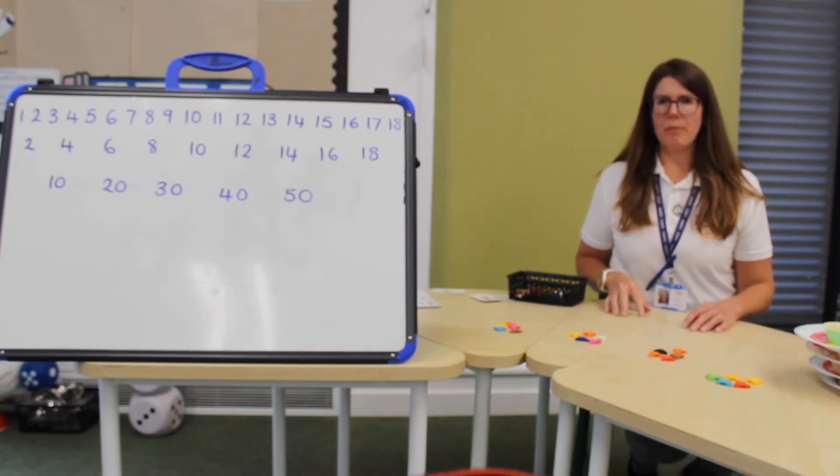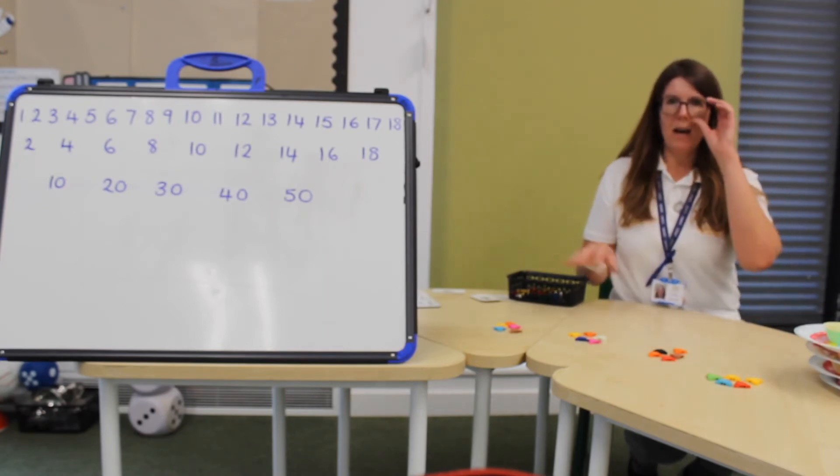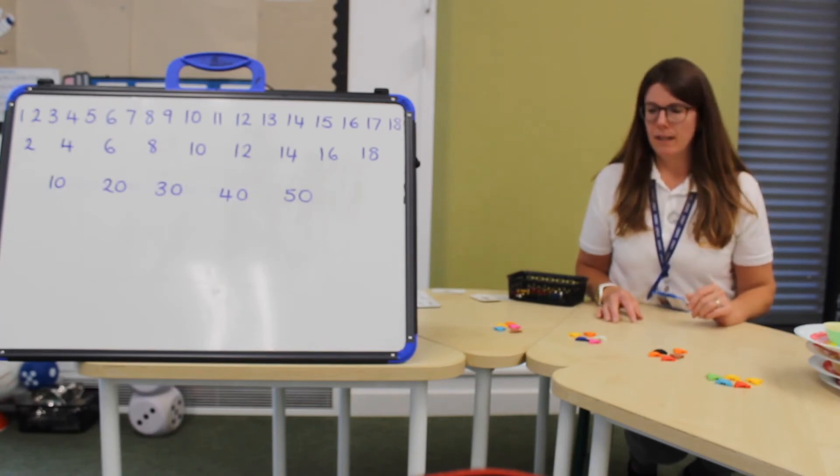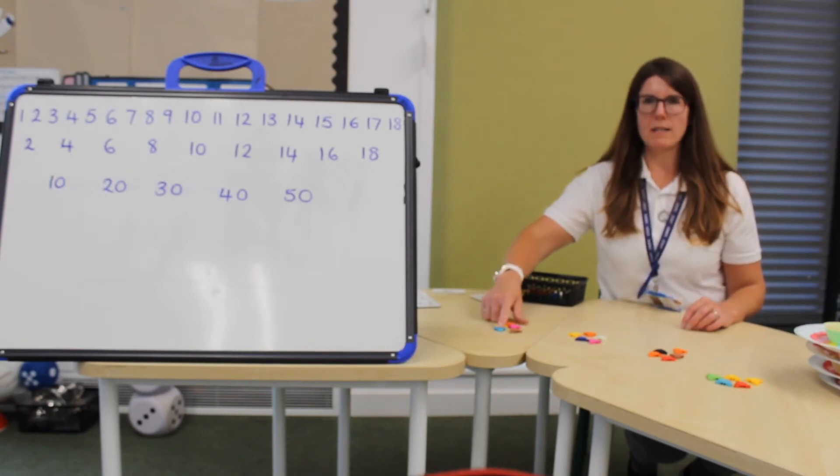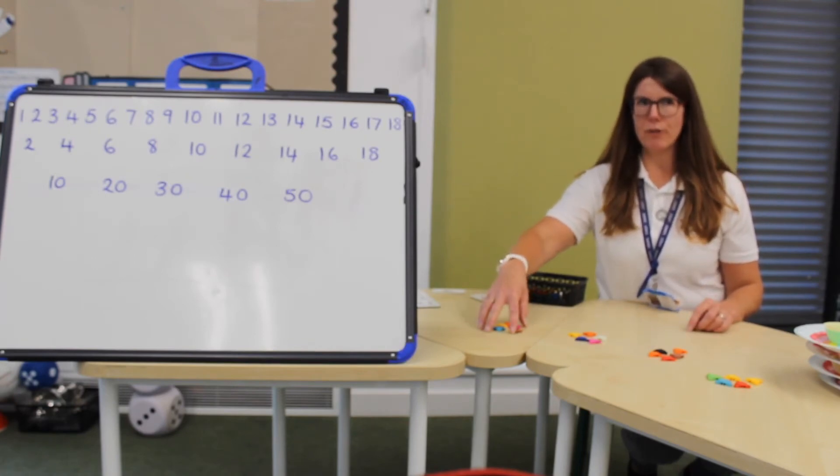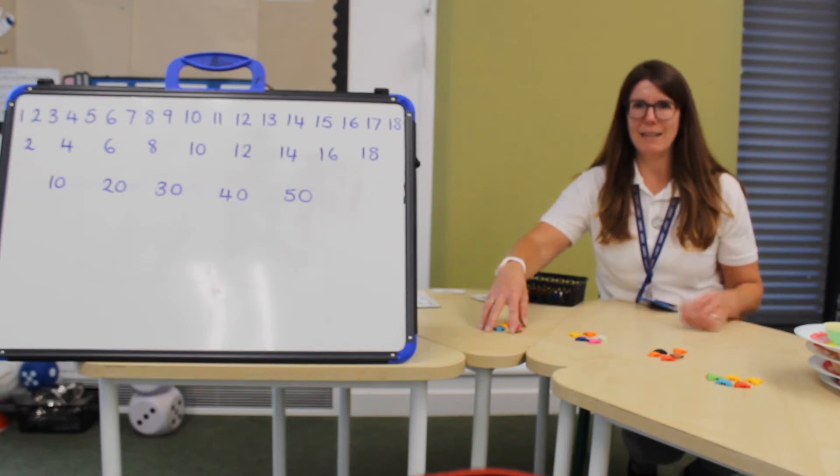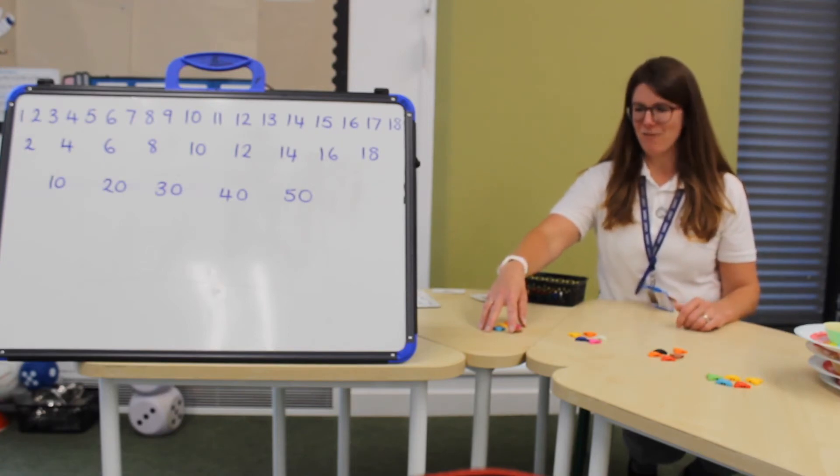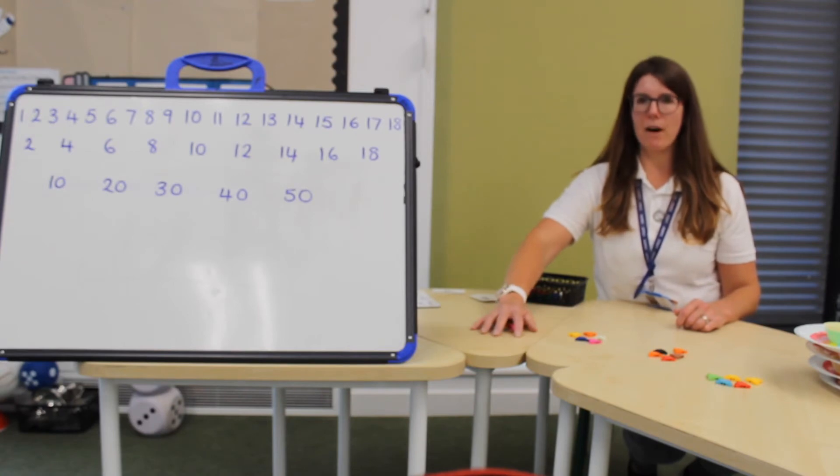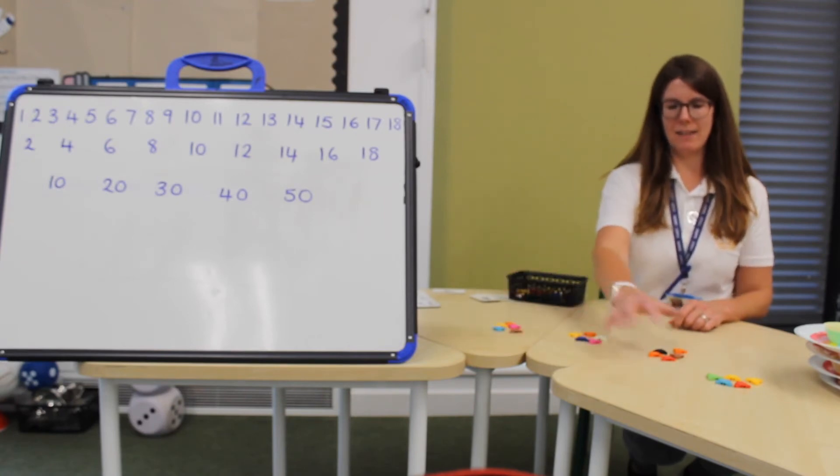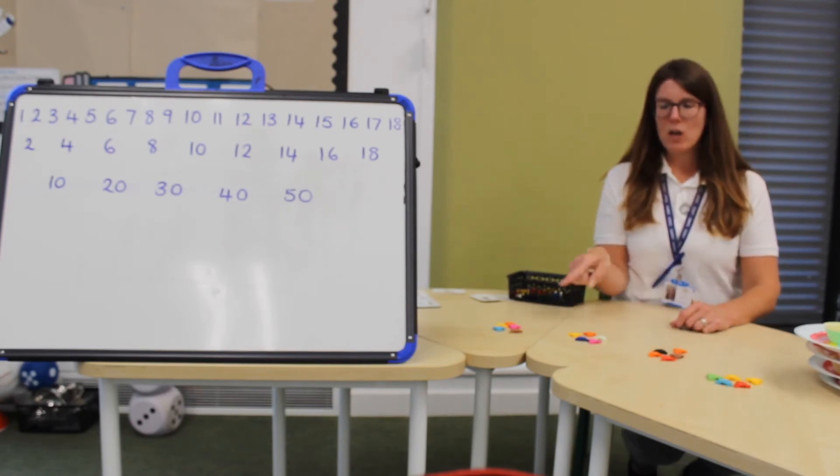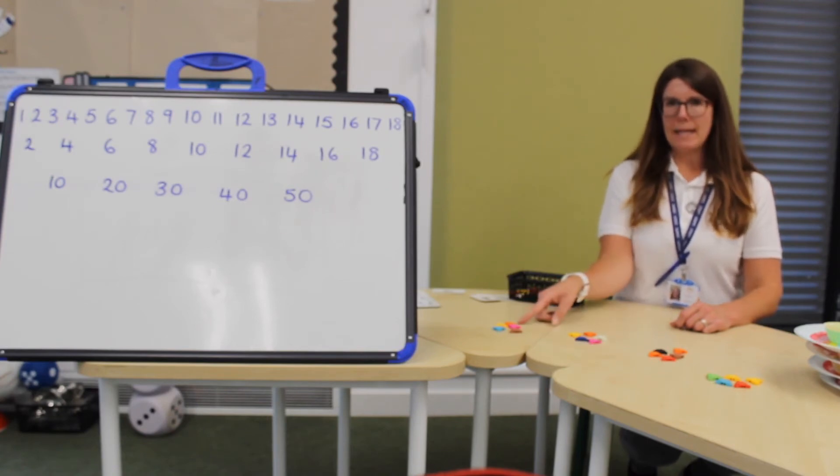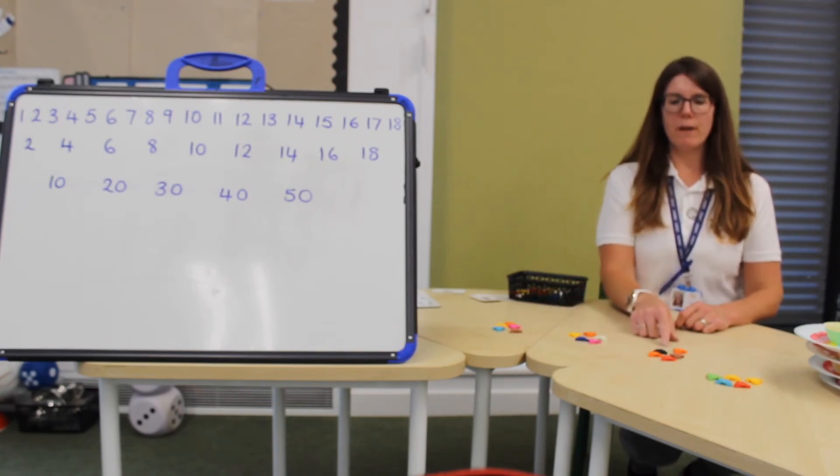If I want to know how many there are all together, what's a quicker way of counting instead of counting in ones? There were five in each group. So I can count in fives. That's right. Let's see how many there are. Five, ten, fifteen, twenty.